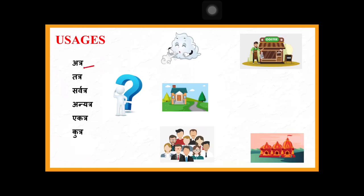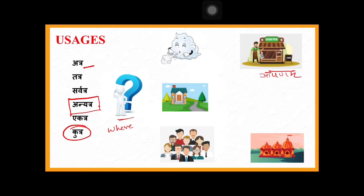Now one more major usage: location words. Kutra is a question word meaning 'where.' For example: 'apanam kutra asti?' — where is the shop? The answer could be 'apanam anyatra asti' — it is somewhere else. Sarvatra means 'everywhere.' Vayuh kutra asti? Vayuh sarvatra asti — air is everywhere.